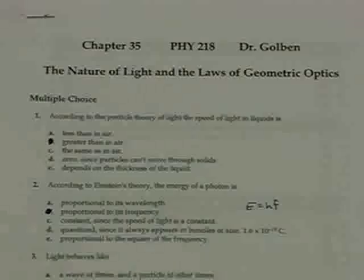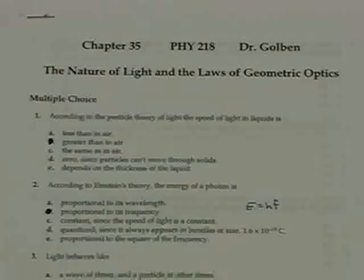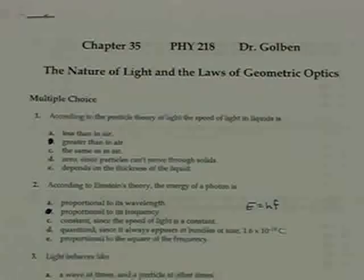Problem number one. According to the particle theory of light, the speed of light in liquids is... Looking back at the history of the particle theory of light, the idea was that if light were to travel through a medium, the gravity of the particles in that medium would pull the light along, and hence it would actually travel faster in a liquid than in a gas. This was obviously wrong, at least later in history, but at the time of Newtonian optics it was thought light would travel faster than in air.